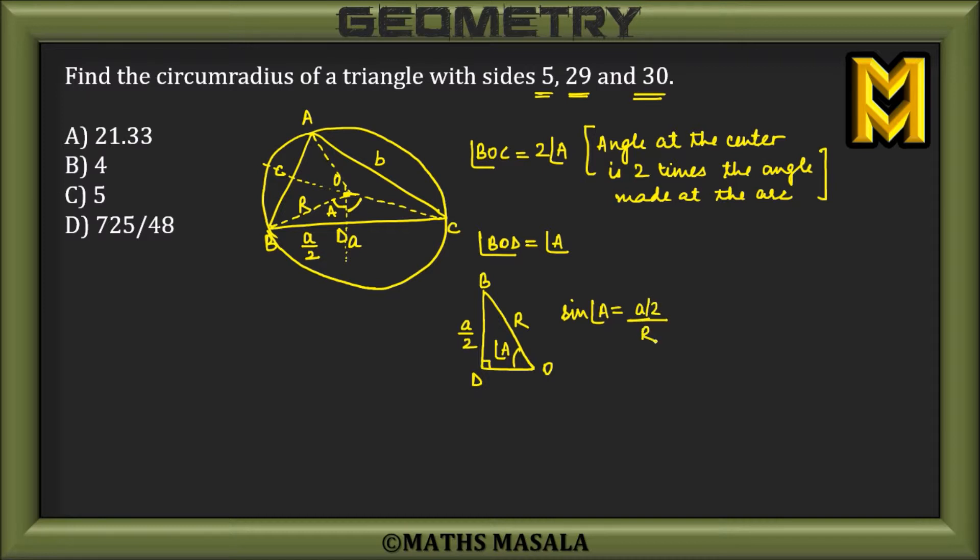divided by R. So this implies sin A equals a/2R. Similarly, I can prove, by taking other sets of triangles, that sin B would be equal to b/2R, and also sin C equals c/2R.